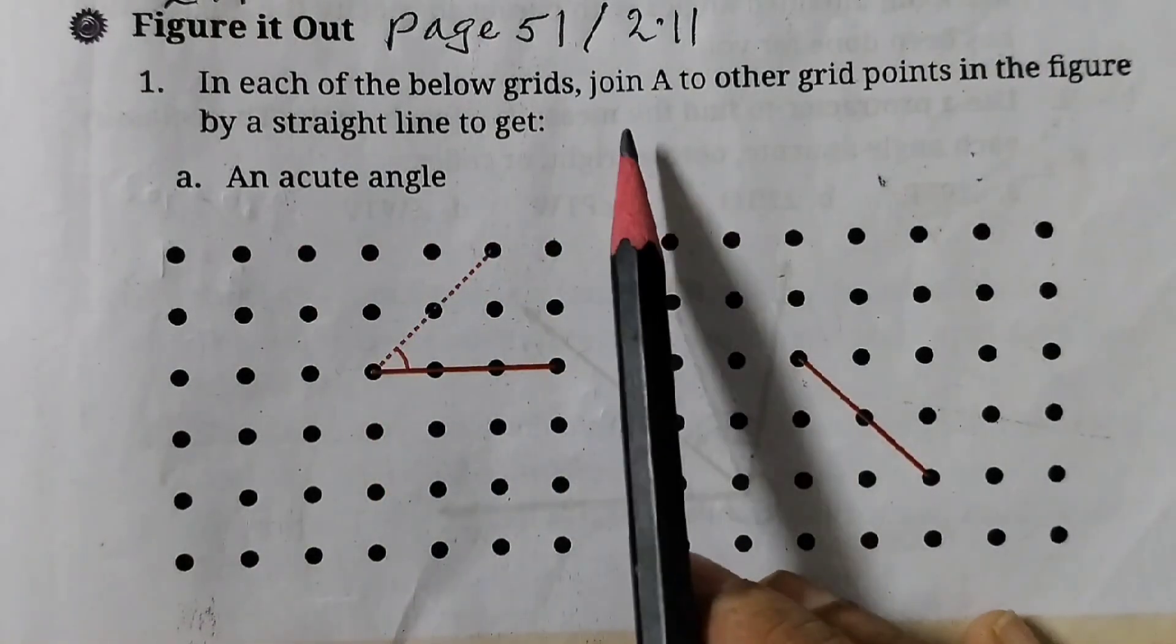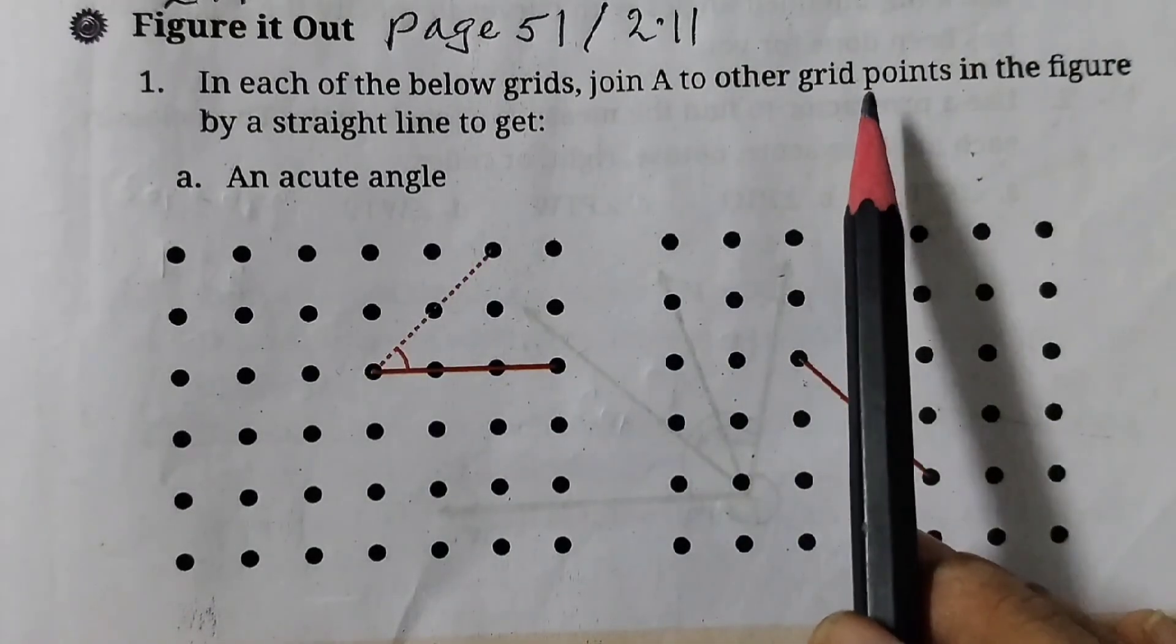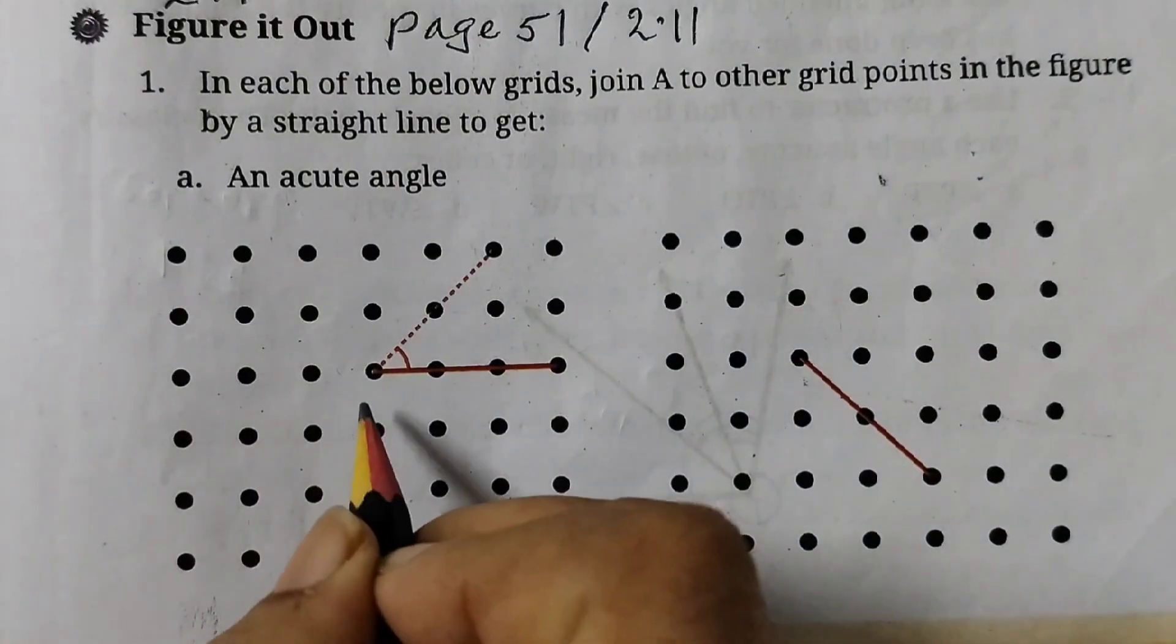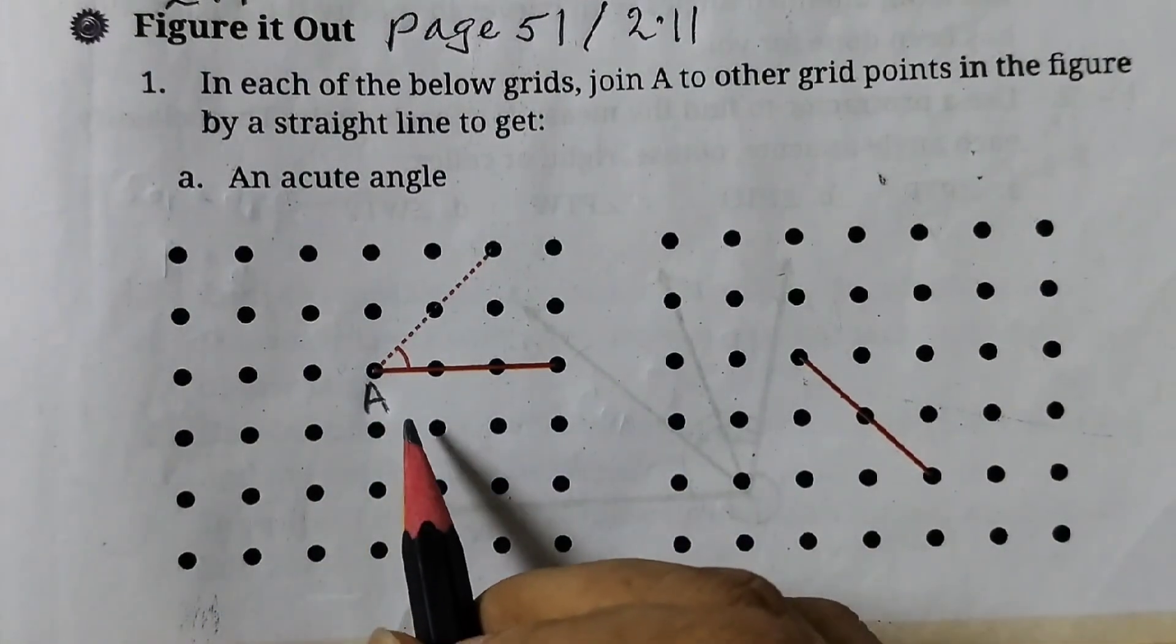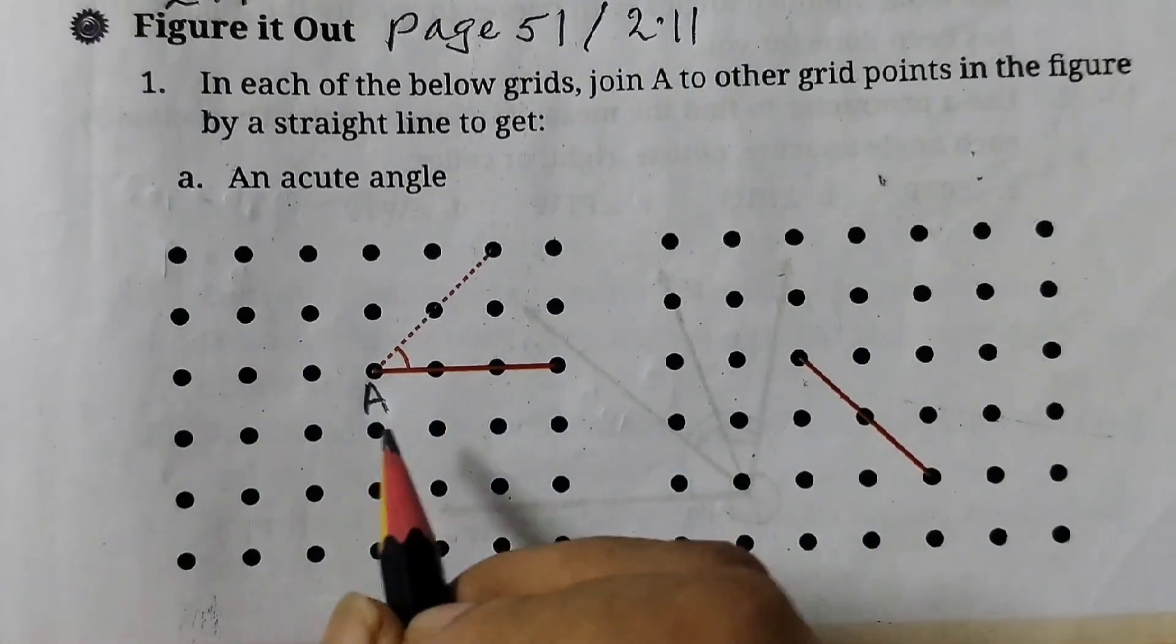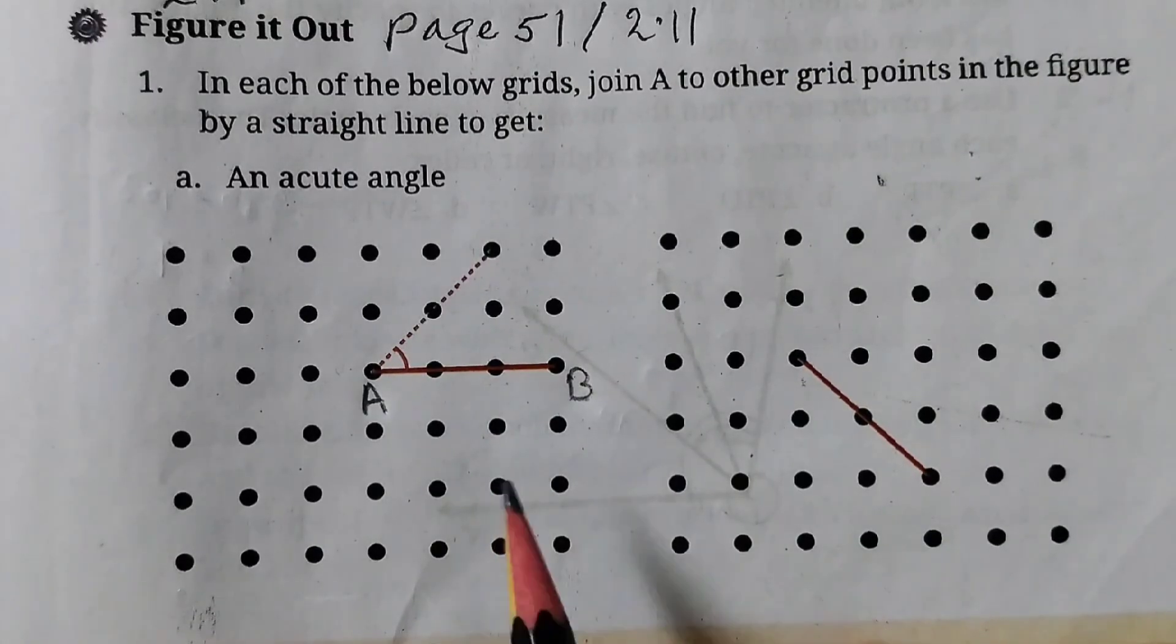One has been done for us. Now see here, it's given join A to other grid points. So first you need to label it as A. Let's label this as A because we need to join A to other grid points. So let's say this is A and this is B. Previously we had a similar question where AB segment was given and we had to draw the angles.